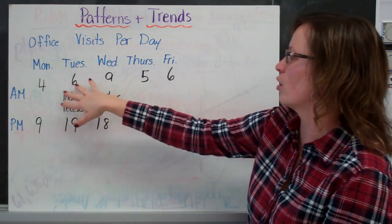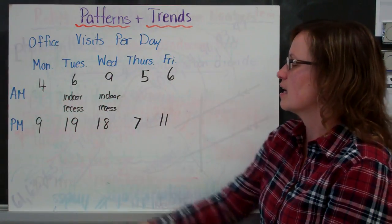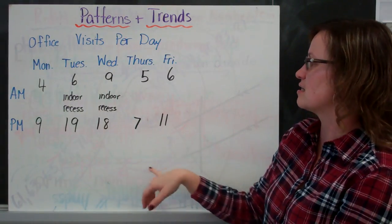So in the AM, we've got 4, 6, 9, 5, and 6. And in the afternoon, I've got 9, 19, 18, 7, and 11.